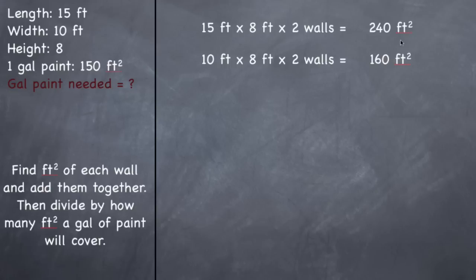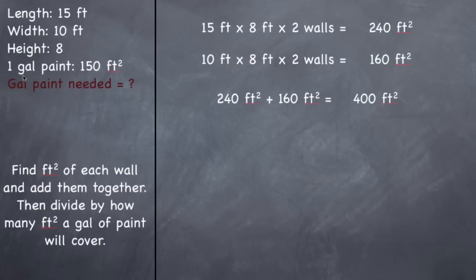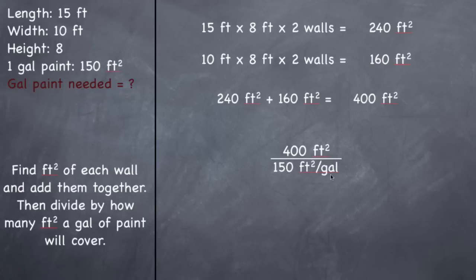So the two longer walls are 240 square feet and the two shorter walls are 160 square feet. Adding them together: 240 plus 160 equals 400 square feet total wall space to paint. One gallon covers 150 square feet, so we take 400 square feet divided by 150 square feet per gallon. The units cancel out, leaving gallons. 400 divided by 150 gives you 2.7 gallons of paint.